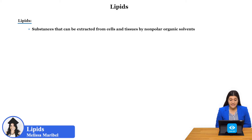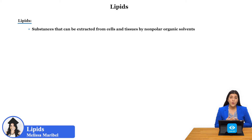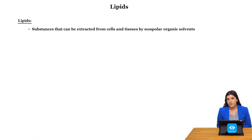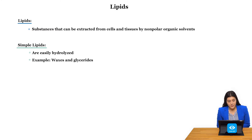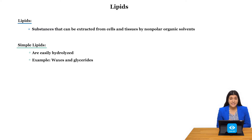Lipids are substances that can be extracted from cells or tissues by nonpolar organic solvents. The first type is known as a simple lipid. What makes a simple lipid is that they are easily hydrolyzed. An example of this is glycerides and waxes.